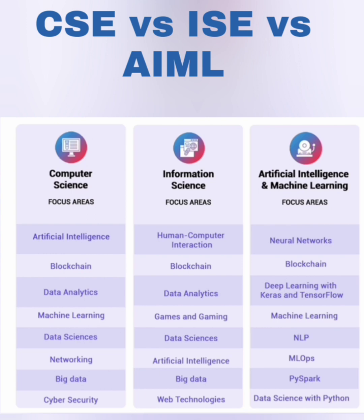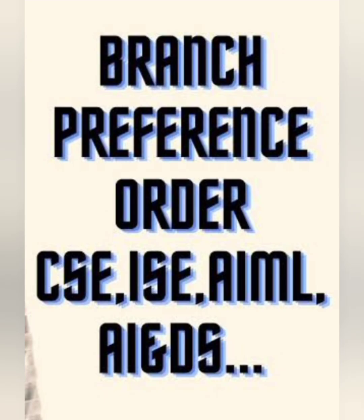Cyber security is in computer science but not in information science or AIML. So networking and security are the two things unique to the computer science branch, which is why it is in highest demand. From a branch preference perspective, the recommended order is: computer science, information science, AIML, and then AI & DS — but you can reverse the order based on your interest. If you're focused on data science, take AI & DS as a higher option. CSC will always be the core focus area. Hope this was helpful — subscribe to the channel for more similar updates. Take care and bye.